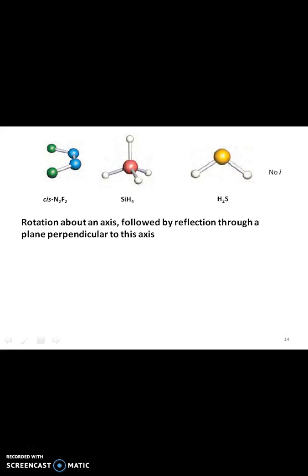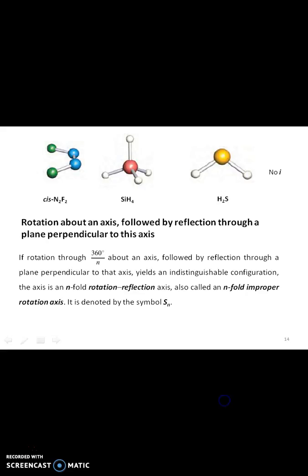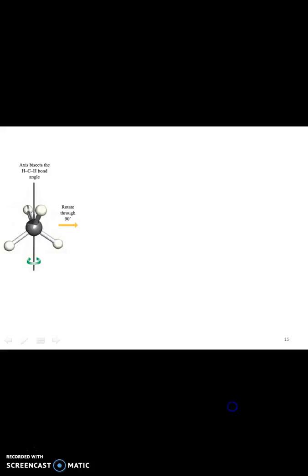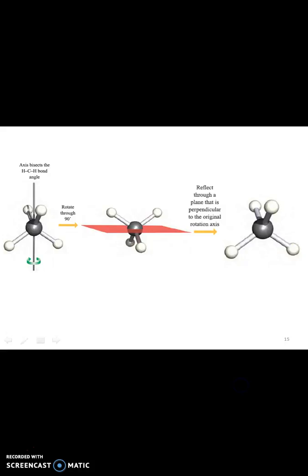Next, the symmetry operation is the improper axis of rotation, that is, rotation about an axis followed by reflection through a plane perpendicular to its axis. If the rotation through 360°/n about an axis followed by reflection through a plane perpendicular to the axis yields an indistinguishable configuration, the axis is an n-fold rotation reflection axis, also known as improper rotation axis, denoted by the symbol Sn. Here, we rotate the molecule through 90° and reflect through the plane that is perpendicular to the original rotation axis.